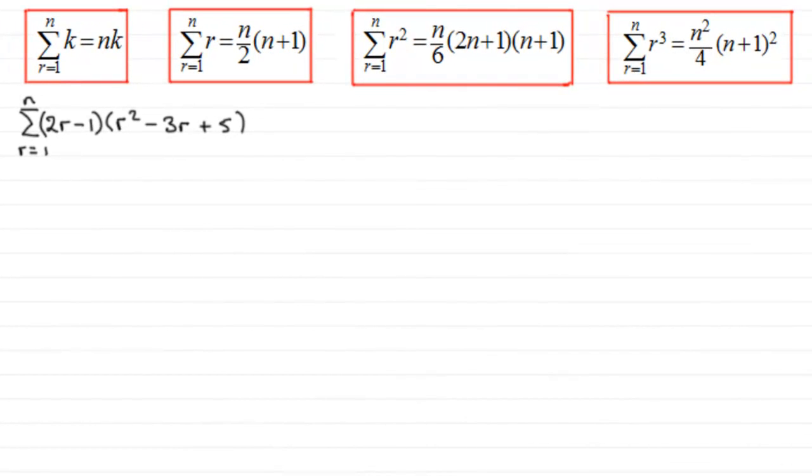Hi, welcome to this video in my series on summation series using Sigma notation. In this particular video, I want to bring together the results that we've discussed in earlier tutorials in this series. For this example, we've got to sum the series of 2r minus 1 multiplied by r squared minus 3r plus 5.